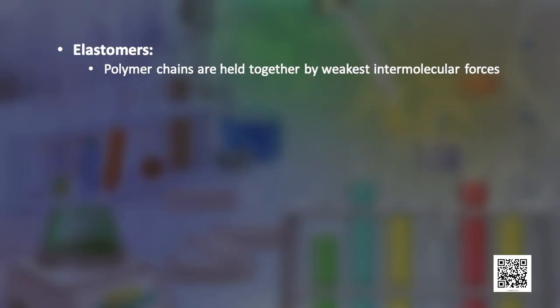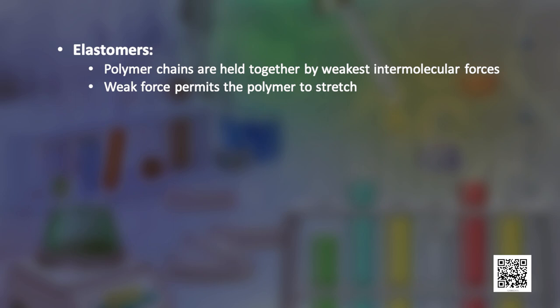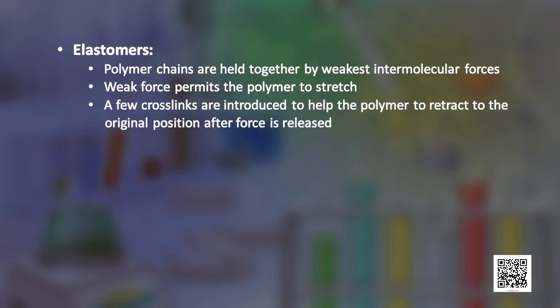Elastomers are rubber-like solids with elastic properties. In these polymers, the chains are held together by the weakest intermolecular forces. These weak binding forces permit the polymer to be stretched and to retract to its original position after the force is released. A few cross-links are introduced between the chains to assist retraction. Examples of this type are Buna-S, Buna-N, and Neoprene.